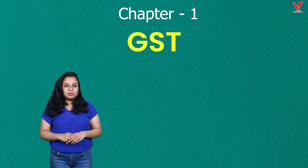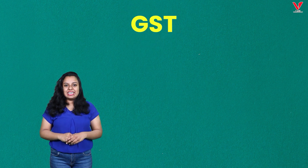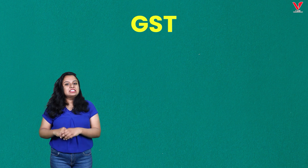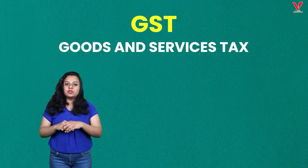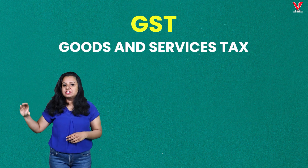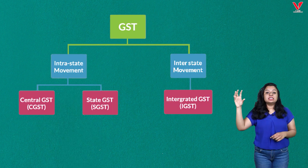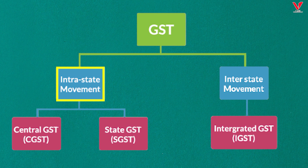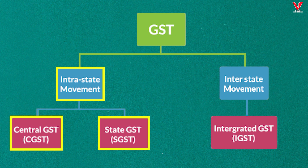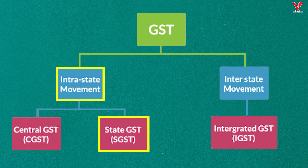What is our Chapter One according to the syllabus? Chapter One is GST — Goods and Service Tax. This is sub-classified into CGST, SGST, and IGST. CGST is Central GST, and IGST is Integrated GST.